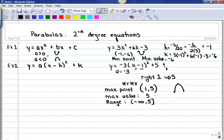The range for the first example would be from our minimum value of negative 6 all the way up to infinity. So our range for this one would be from negative 6 to infinity.